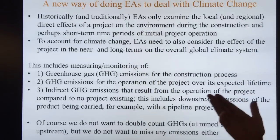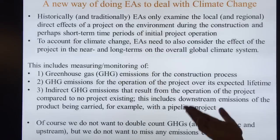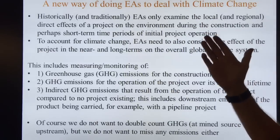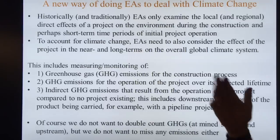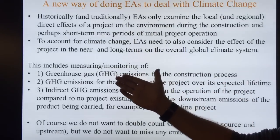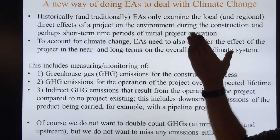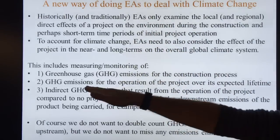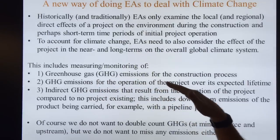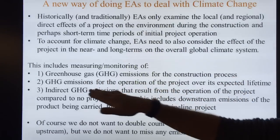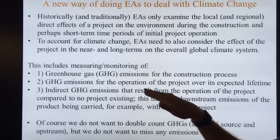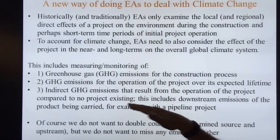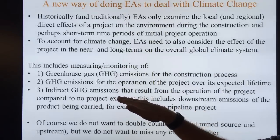Climate change is not even considered in the way we do environmental assessments — they only look at the local, not the long-term greenhouse gas component. So in order to modify these EAs to make them relevant in today's world of rapidly changing climate, we need to examine the greenhouse gas emissions for the construction process, the greenhouse gas emissions for the operation of the project over its expected lifetime, and also indirect greenhouse gas emissions.